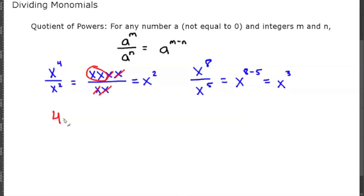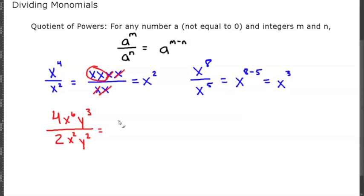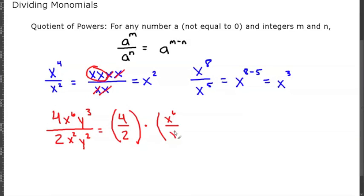Let's look at 4x to the sixth y to the third all over 2x squared y squared. We can break this up into like terms: our numbers first — 4 over 2 — then x to the sixth over x squared, since those variables have the same base.